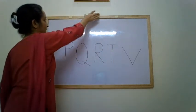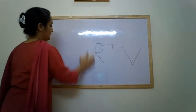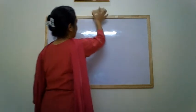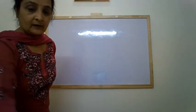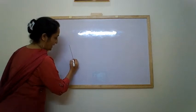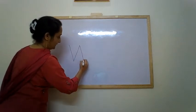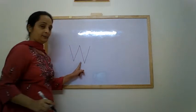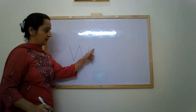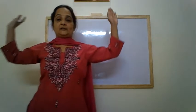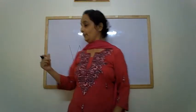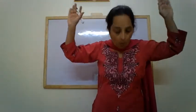Now let's see the last set of letters. W: down, up, down, up — W. W makes the sound W.